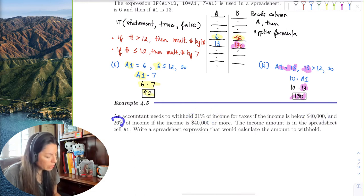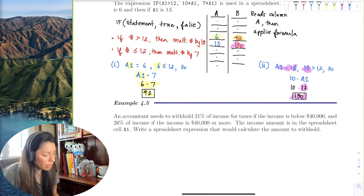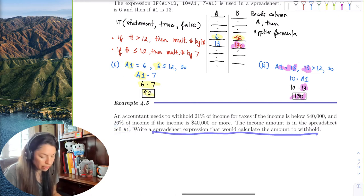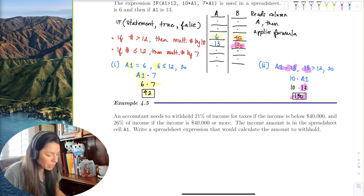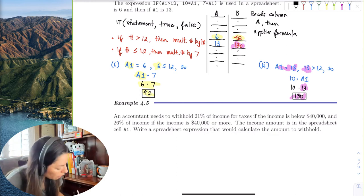The income is in the spreadsheet cell A1. So write a spreadsheet expression that would calculate the amount to withhold.